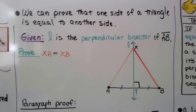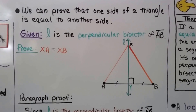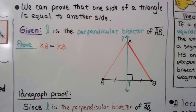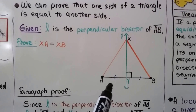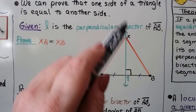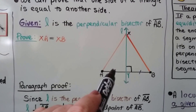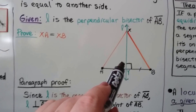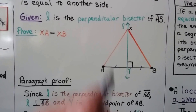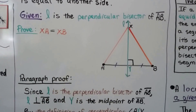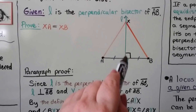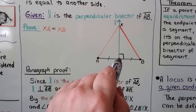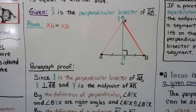We can prove that one side of a triangle is equal to another — that this orange side is congruent to this orange side. We have L as a perpendicular bisector. This segment is congruent to this segment, this is a right angle, and so that must be a right angle because that's a bisector. We know that if it's a bisector and it's perpendicular, then Y is equidistant.